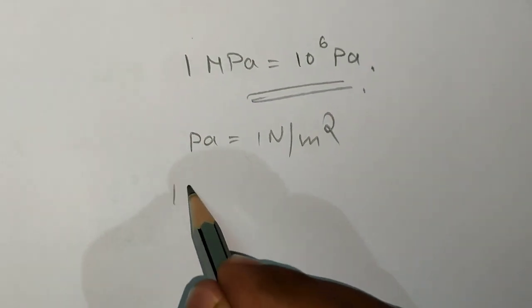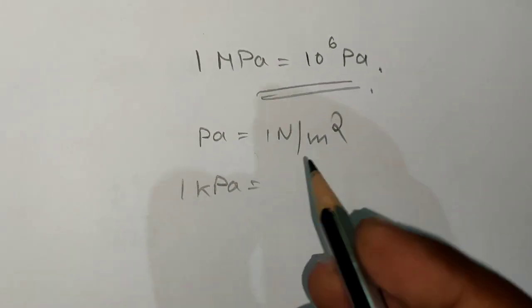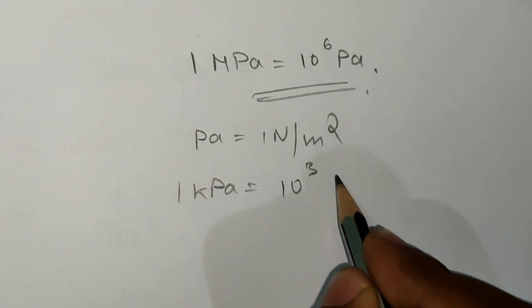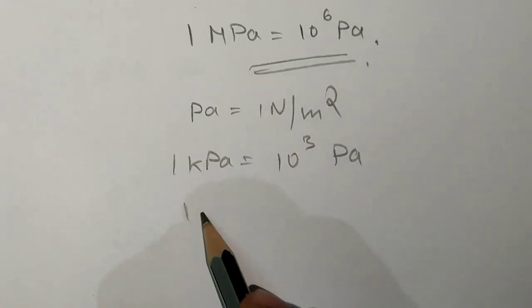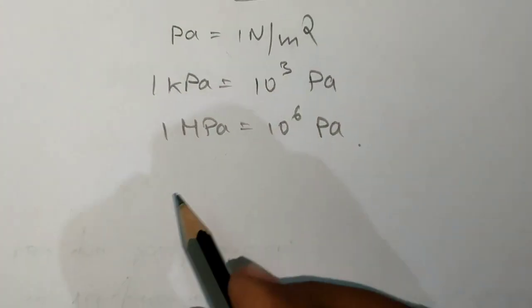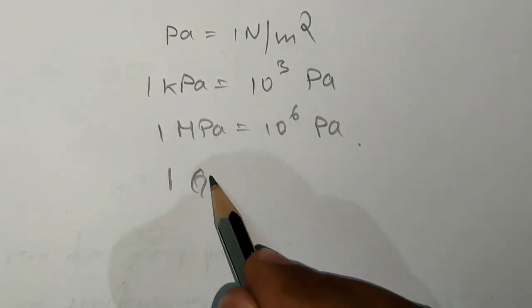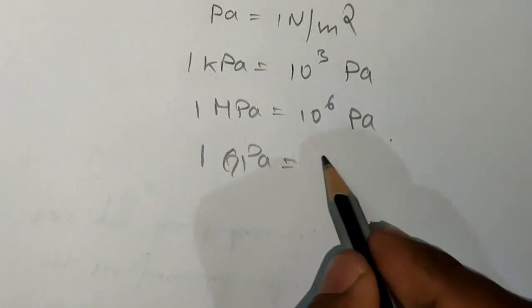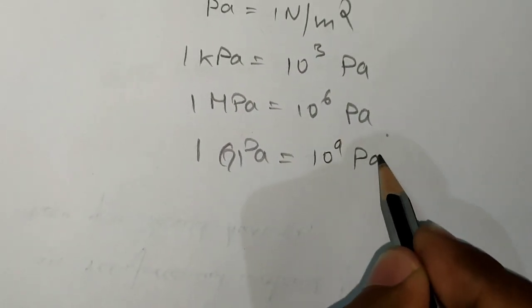1 kilopascal equals 10^3 Pascals, 1 megapascal equals 10^6 Pascals, and 1 gigapascal equals 10^9 Pascals.